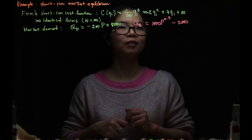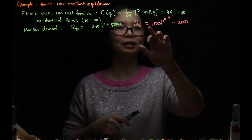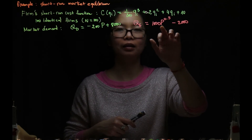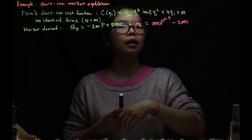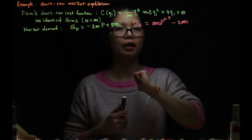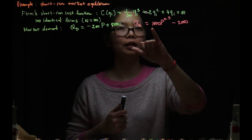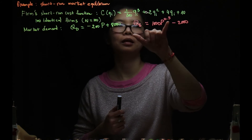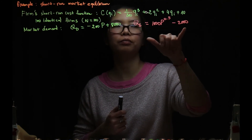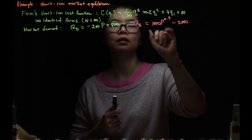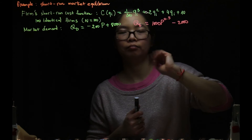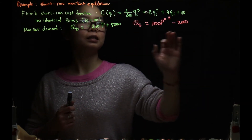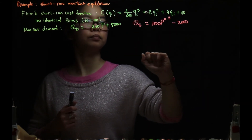Before continuing, I hope you noticed I made a mistake — at one point I dropped the 10 when calculating the industry supply. So the correct answer is 1000 times P^0.5 minus 2000, not 100 times P^0.5 minus 2000. Just keep that in mind.